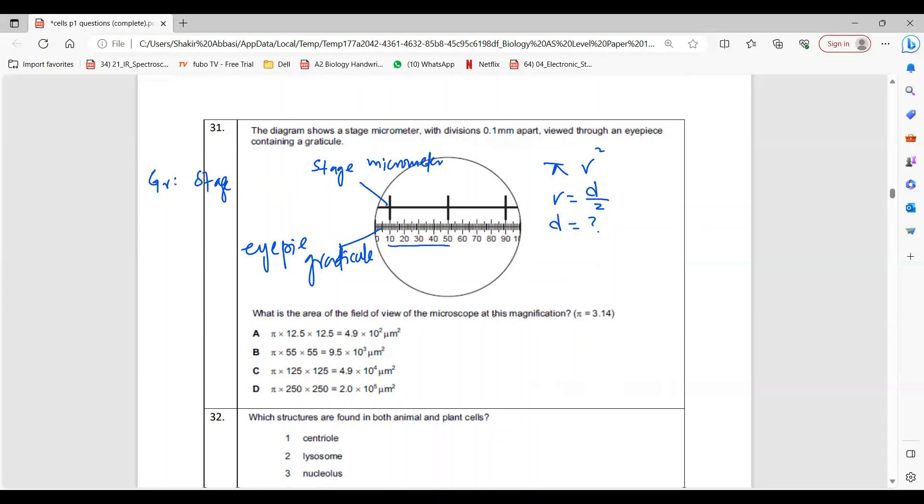You can see 40 graticule equals 0.1 millimeter as given, so one graticule equals x. This means one graticule is 0.1 by 40, whatever is the answer in micrometers. So diameter will be 100 times one graticule, and if you divide by 2 you will get the radius. Then you can do pi r squared.